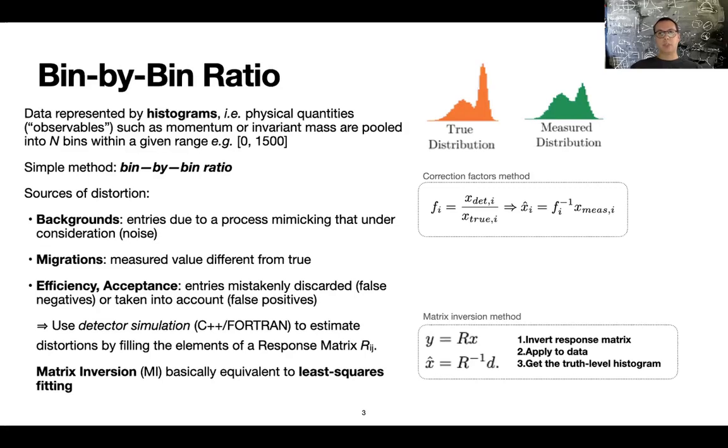So to do all of this, usually scientists have a computer model of the experimental apparatus that, for example, can be programmed in C++ or Fortran for performance reasons. And you use this big program to encode the effect of these distortions. The idea is that you promote these efficiency factors to a matrix and you call it a response matrix or migration matrix. So all you have to do is basically to calculate the inverse of this matrix and apply it to the actual data. At this point you have a ground level histogram that you can compare to the truth level or whatever comes from a calculation. So this is called the matrix inversion and this is basically equivalent to least square fitting.